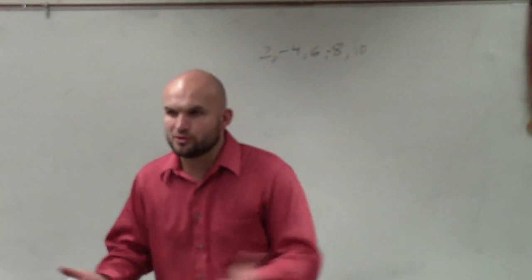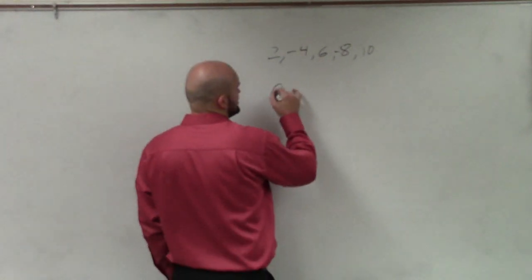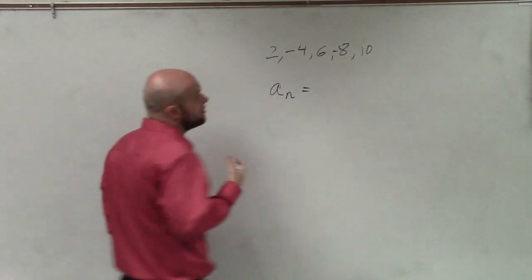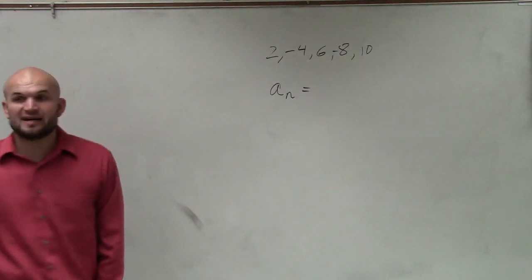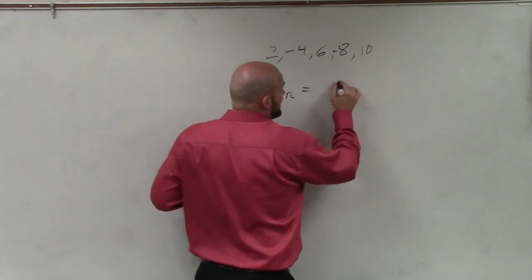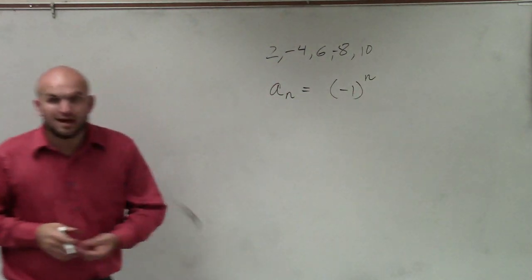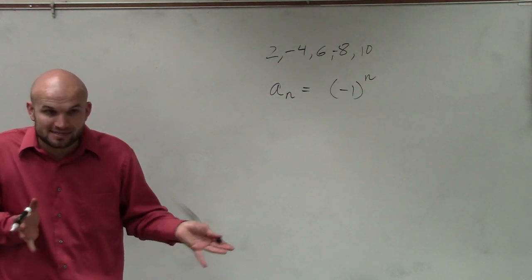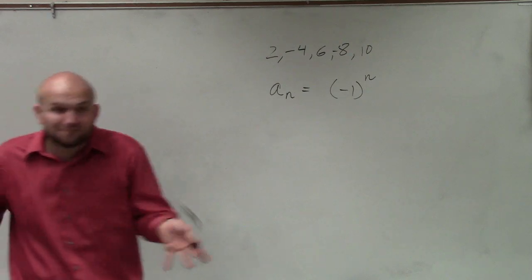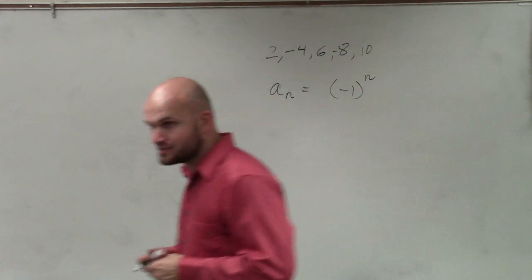On a problem like this, if they're asking us to determine the rule, the first thing, Caroline, we're going to want to make sure we have is: I notice that it's an alternating sign, correct? So the first thing I know I have to incorporate is negative 1 raised to the n. Obviously, this is more detailed than that, but I know I have to include negative 1 raised to the n because I have alternating signs.